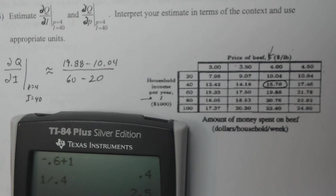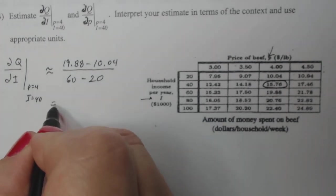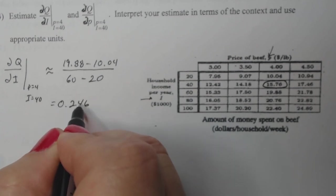Again, you can go from one side and just do the change there or the other side and do the change there. It'll be pretty close, but this is surprisingly the most accurate. So let's calculate this. 19.88 minus 10.04 divided by 60 minus 20. I'm just going to do it in one big shot. 0.246.